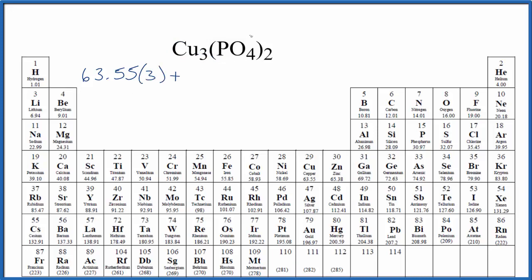And then for the PO4, this is the phosphate ion, we have two of these phosphate ions so we'll first find the phosphate and then we'll multiply all of that by two.